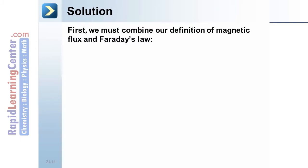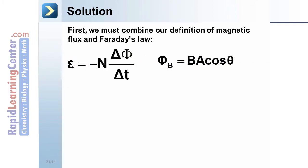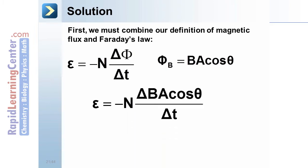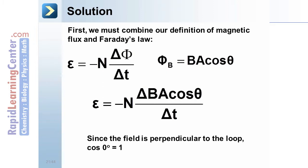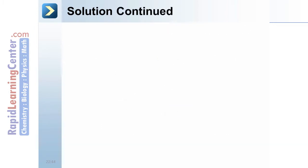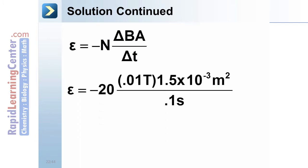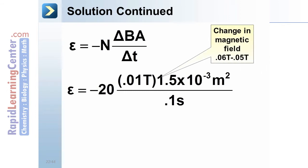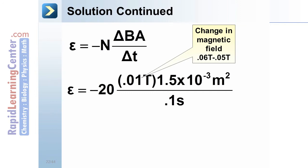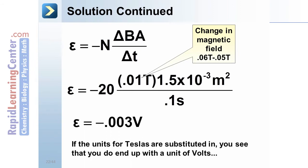Solution. First, we must combine our definition of magnetic flux and Faraday's Law. We substitute B A cosine theta where flux appears in Faraday's Law. Since our field is perpendicular to the loop — zero degrees between them — cosine of zero is 1, which simplifies the formula. Substituting the given values — 20 turns, the area, and the time — the change in the B-field is 0.01 tesla, because it goes from 0.06 tesla to 0.05. When we calculate, we get an EMF of 0.003 volts.